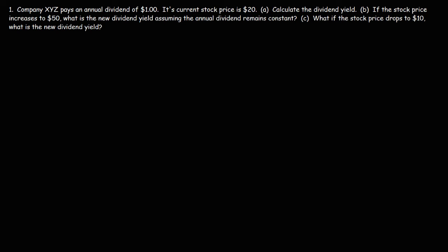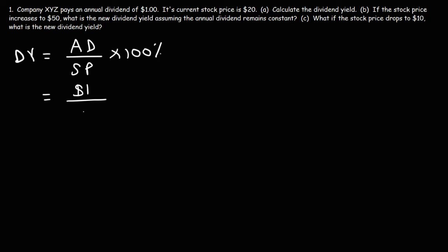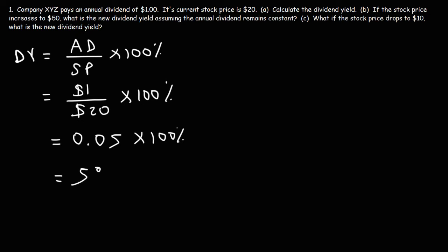Now let's work on some example problems. Number one: company XYZ pays an annual dividend of $1, and its current stock price is $20. Part A — calculate the dividend yield. The dividend yield equals the annual dividend divided by the current stock price times 100%. That's $1 divided by $20, which gives us 0.05, and multiplied by 100% gives us a dividend yield of 5%.